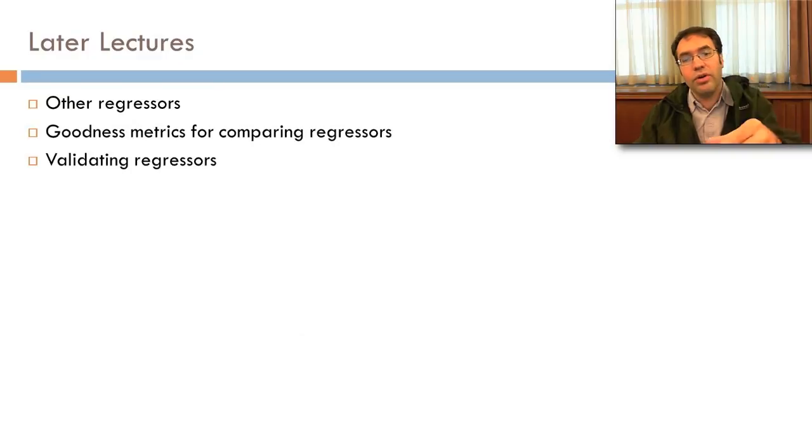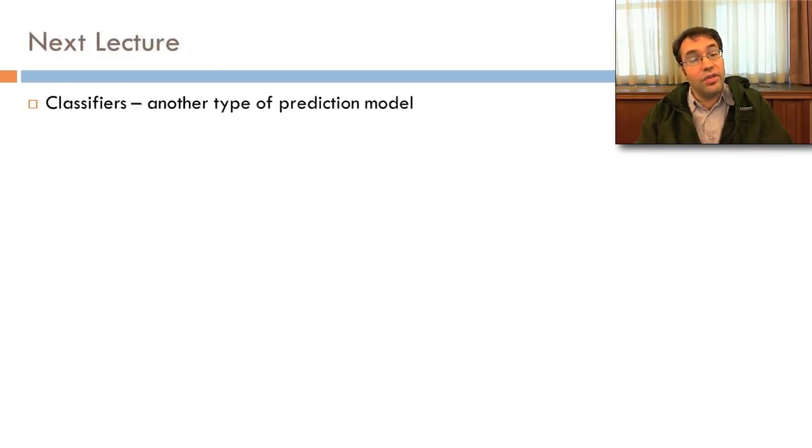In later lectures, I'm going to talk about other regression algorithms. I'm going to talk about goodness metrics for comparing regressors. And I'll talk about how to validate regressors. In the next lecture, though, I'm going to kind of quickly start to overview classifiers, which are another type of prediction model.